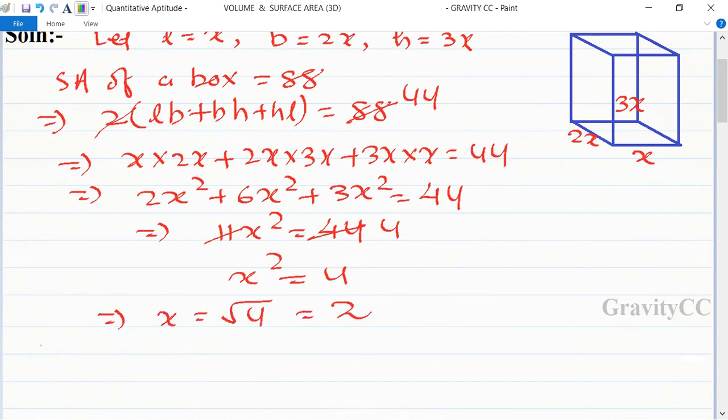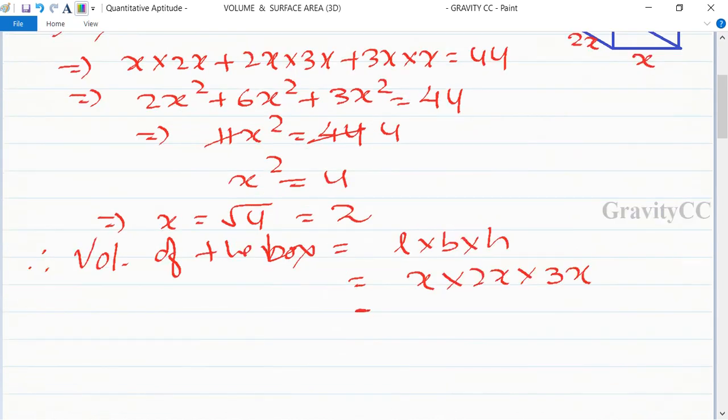So therefore volume of the box is equal to l into b into h, so is equal to x into 2x into 3x, so equal to 6x³. And 6 into the value of x is 2,